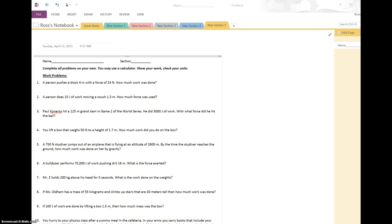So starting with number 3 here, where Paul hit a 125 meter grand slam in game 2, he did 3,000 joules of work, what force? So this is just using the work equation backwards. First, let's remind ourselves, work is force times distance.